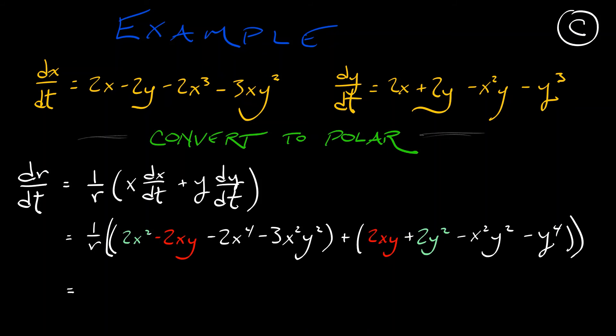Writing things out at this point gives us 1 over r times quantity 2r² minus 2x⁴ minus 4x²y² minus y⁴.